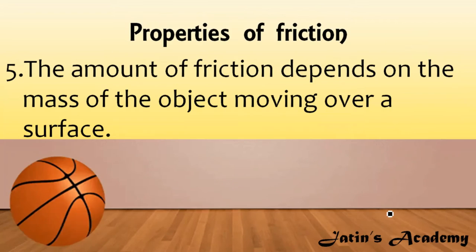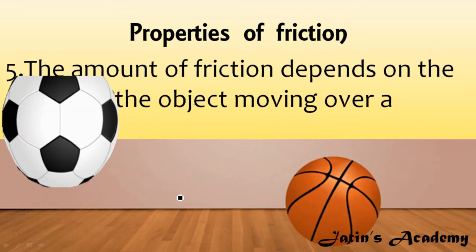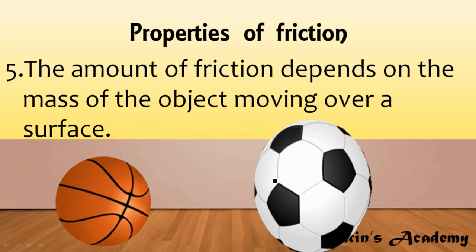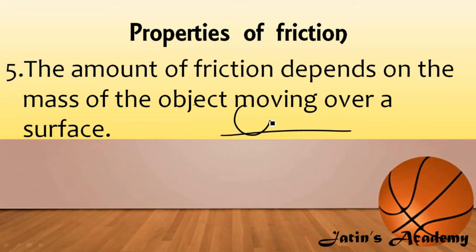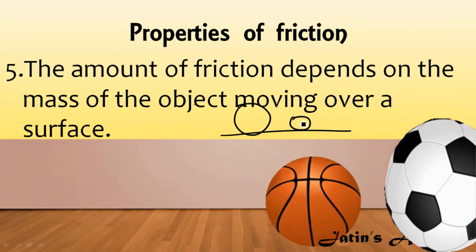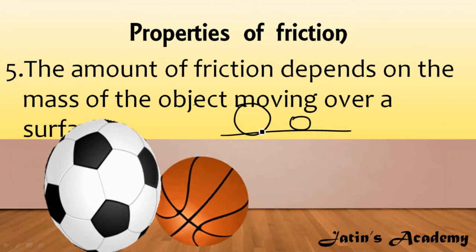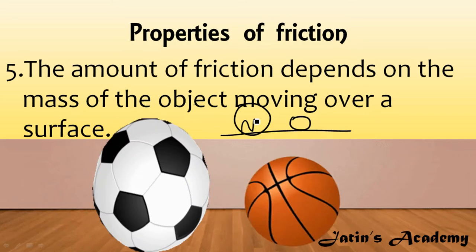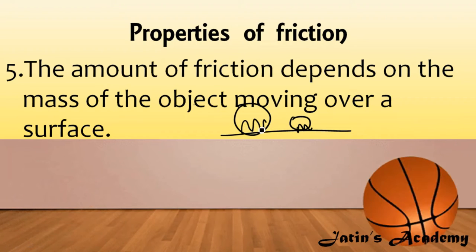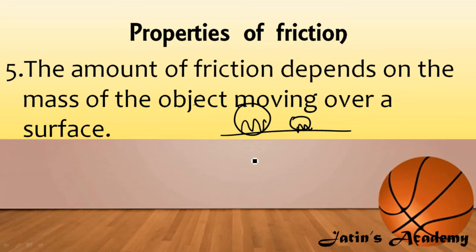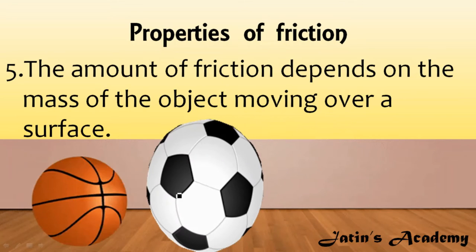Fifth property: the amount of friction depends upon the mass of the moving object. An object with greater mass has greater friction because there is more interlocking between the surface and the heavier object. A lighter object has less interlocking and therefore less friction. So heavier objects slow down more easily due to greater frictional force.